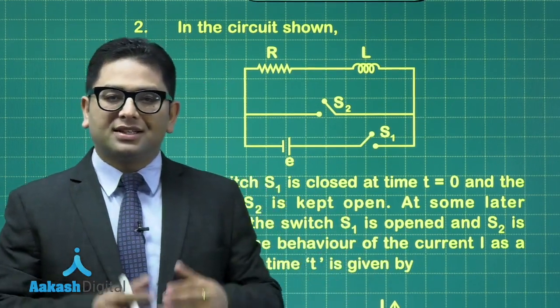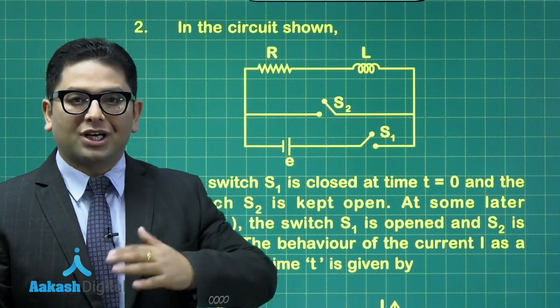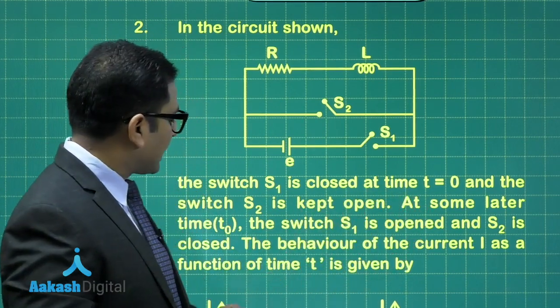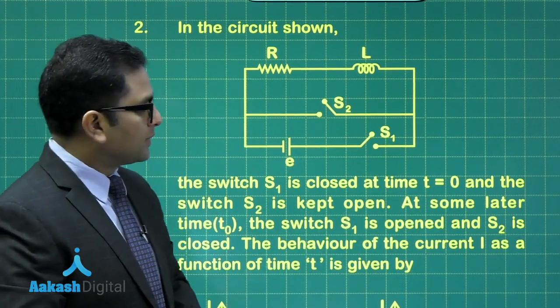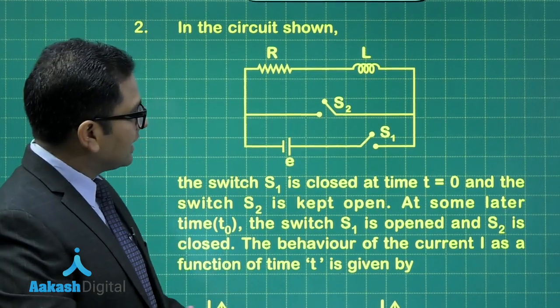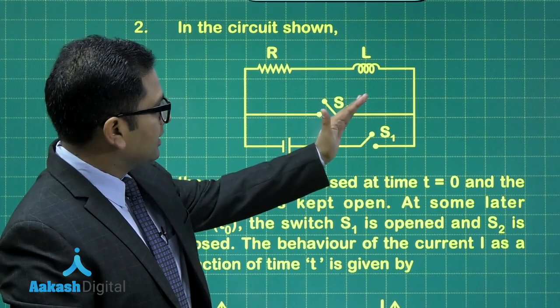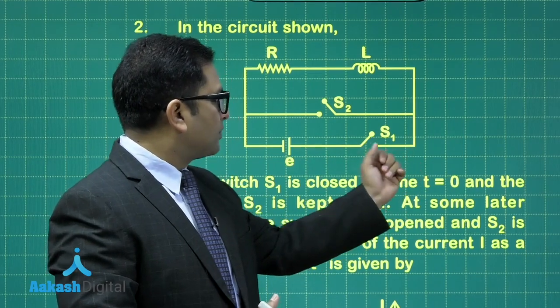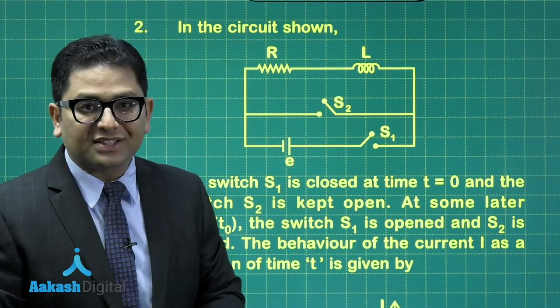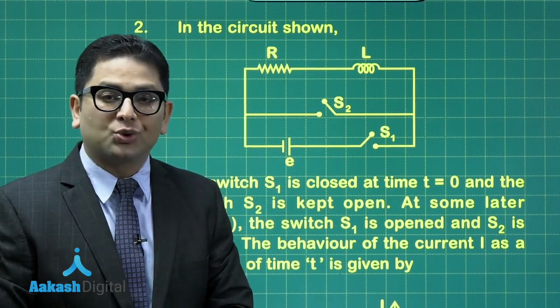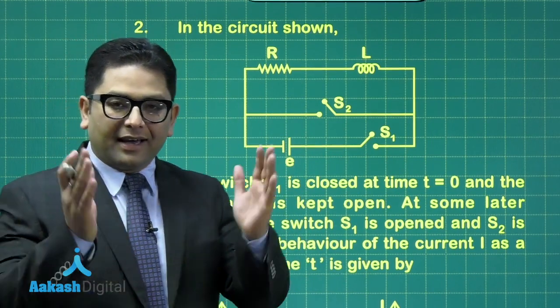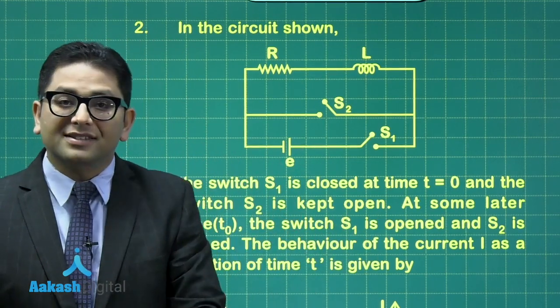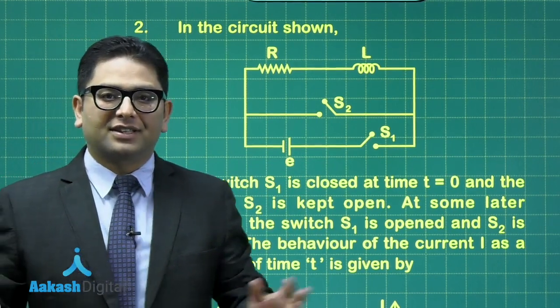So quite obviously, initially the circuit is a RL charging circuit. So current would build up exponentially with respect to time. After that, at some later time t0, the switch S1 is open and S2 is closed. That means after time t0, S1 is open and S2 is closed. That means now moment this switch is open and this is closed, the battery would be dysfunctional and the circuit simply reduces to a RL discharging set. In other words, before time t0, the circuit was a charging circuit and after time t0, the circuit is a discharging circuit. So that's very clear.